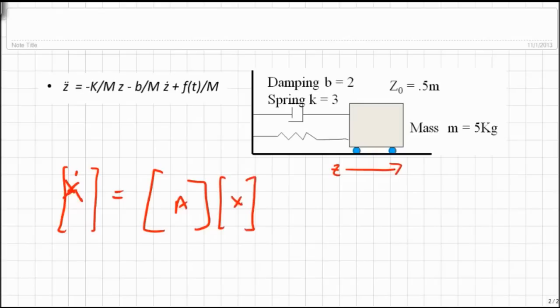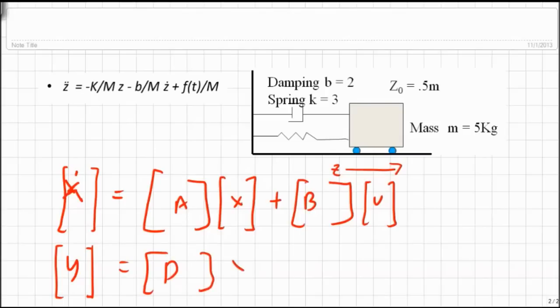Plus some matrix B times the inputs, which we'll call U, and our outputs Y, it could be single, there could be several, often an array, equals another matrix times our states, whatever our states are, plus, oops, that's not a D, that's a C, and this is D, times our inputs.